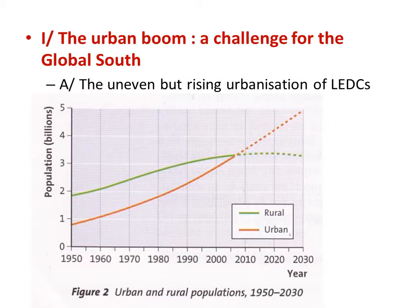In part A, let's describe an uneven but rising urbanization in LEDCs. A few words about the graph you can see now. It illustrates the fact that an incredibly important event happened very recently. In 2007, for the first time ever in the history of mankind, the number of people living in cities overtook the number of people living in the countryside, putting an end to millennia of domination of rural areas in numbers of people.